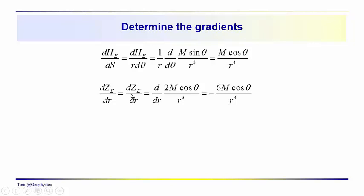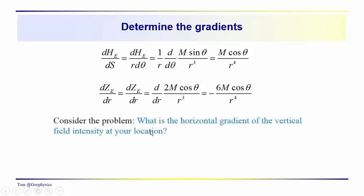So the gradient is dropping off with r raised to the fourth power. Similarly for the vertical component, dZ_e/dr. This becomes negative. So as theta increases, you know we're getting closer to the equator. We know that the vertical component gets smaller. Over here it gets larger as theta gets larger. And this is dropping off as minus 6 times the dipole moment times the cosine of theta over r to the fourth power. Both of these gradients drop off with r to the fourth.